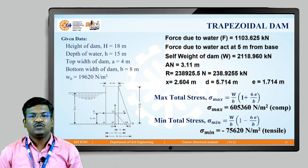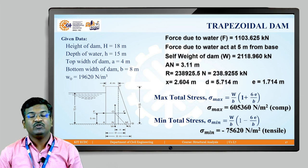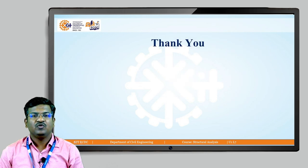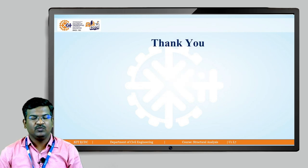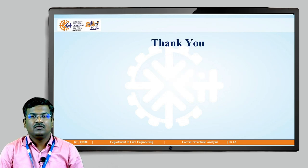The maximum stress acts on the toe side (point B) and the minimum stress acts at the heel side (point A). I hope you understand this numerical and the theory behind it. Thank you.